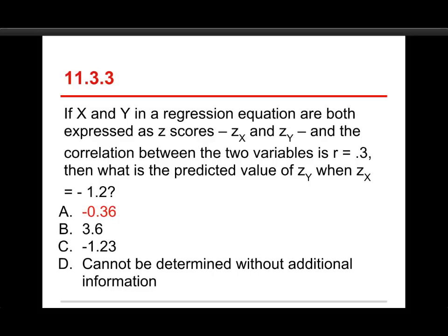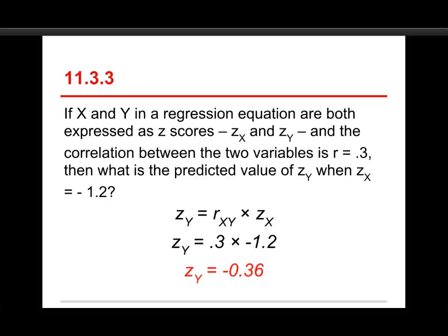The answer here is negative 0.36, and here's how it works. All you need is the short little Z score version of the regression equation, and you just plug in the values that we have. We have a Z score for X of negative 1.2, so I put that in at the far right. We have a correlation between X and Y of 0.3, and by the way, it doesn't matter if the correlation is based on the Z scores or on the raw scores, because it's identical. And then it's 0.3, and just multiply those two numbers. 0.3 times minus 1.2 is equal to minus 0.36, and that's our Z score on the Y variable.